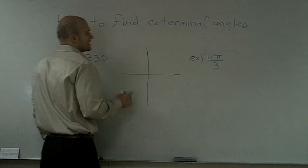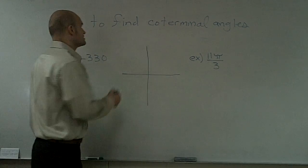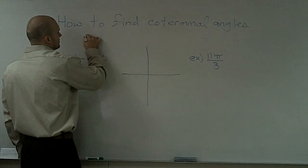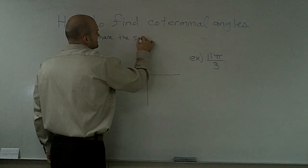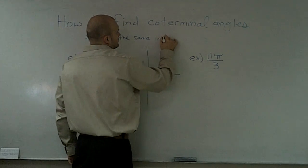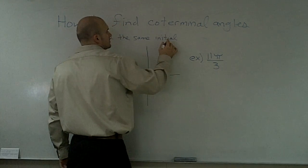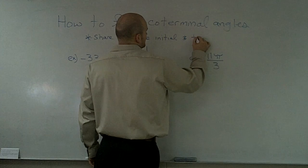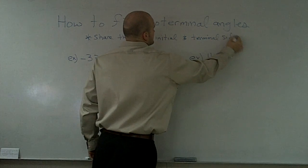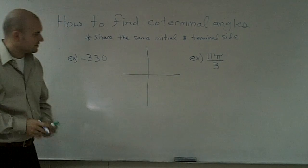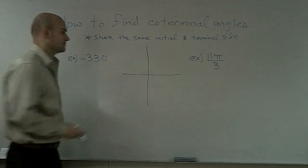Coterminal angles are two angles that share the same initial and terminal side. First of all, I'm just going to use this little graph here. What exactly is an initial and a terminal side?